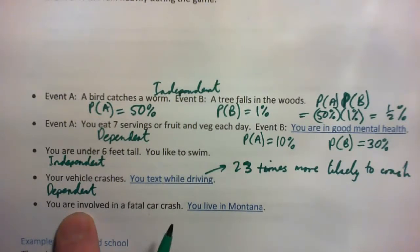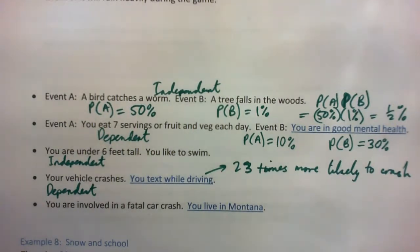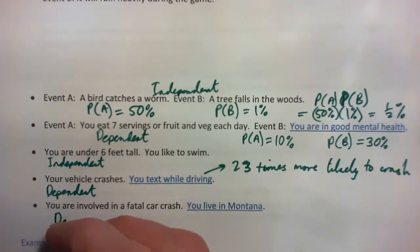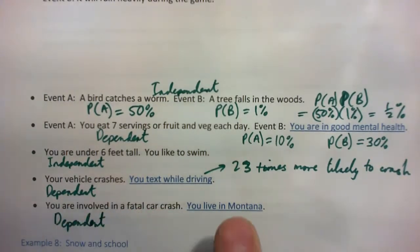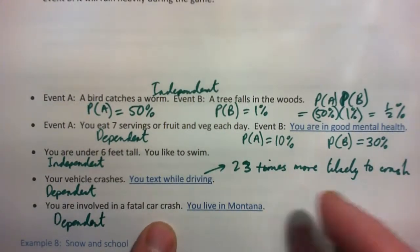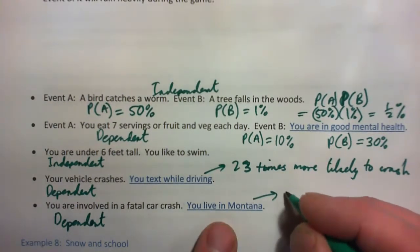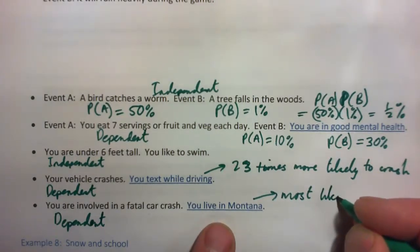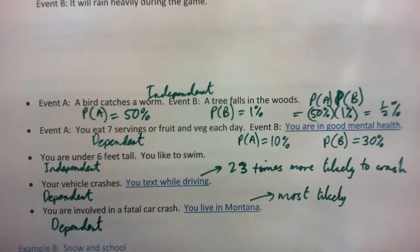Here's another one: you're involved in a fatal car crash and you live in Montana — are those dependent or independent? Believe it or not, these are actually dependent. Different states have different likelihoods of being involved in a fatal car crash. One study shows that Montana is the most likely state to die in a car crash. So they're dependent events.